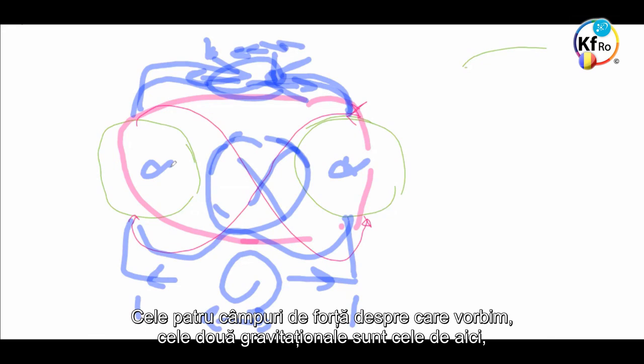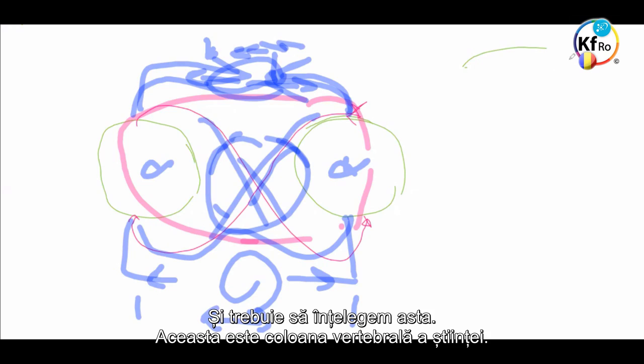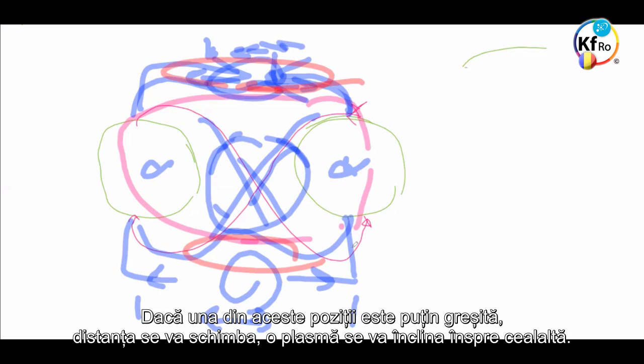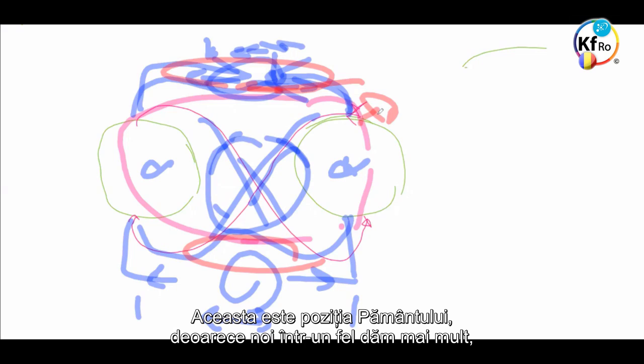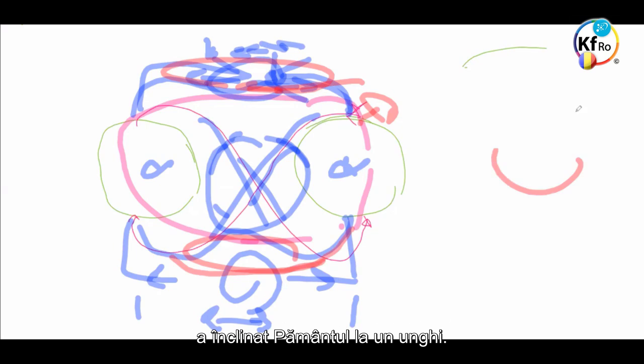This is what I explained in some of the teachings, and I'll carry on explaining till we make more understanding of it. The four Field forces we talk about, the two gravitational, are these two which are here. And, these two here are the two magnetical, the separation. And, we have to understand this, this is the backbone of the science. If one of these position is slightly wrong, the distance will change. The one Plasma will tilt towards the other. This is the position of the Earth. Because, we are in a way, giving more, or taking more on the gravitational. And, this gravitational, in respect to our environment, has tilted the Earth into an angle.